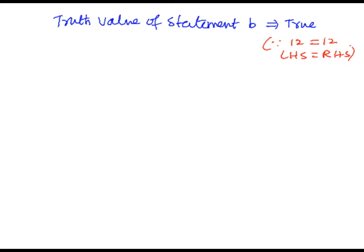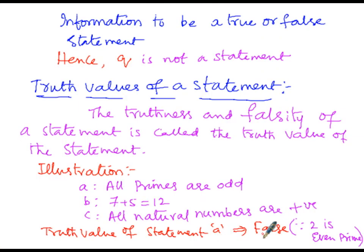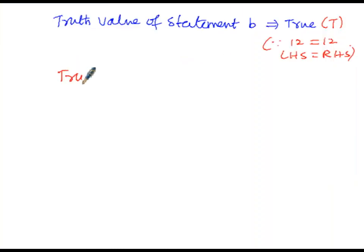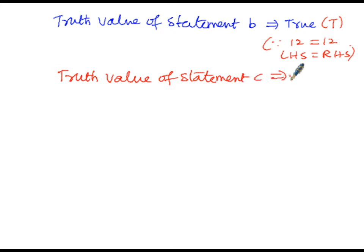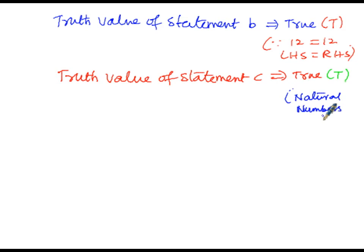We denote truth value true by capital T, and truth value false by capital F. For statement C — 'All natural numbers are positive numbers' — the natural numbers are 1, 2, 3, 4, and so on. All are positive numbers. Therefore C is a true statement, and its truth value is true (T), since each natural number is a positive number.